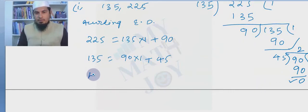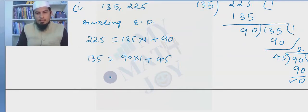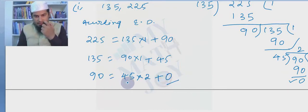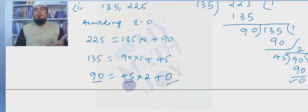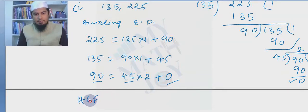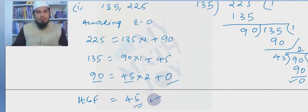We write the statement using Euclid's division lemma: 90 = 45 × 2 + 0. We got remainder 0, which means 45 is the HCF. So HCF of 135 and 225 is 45.